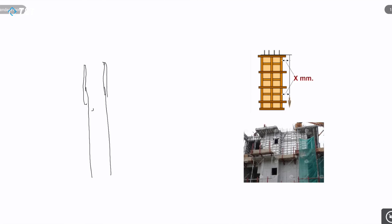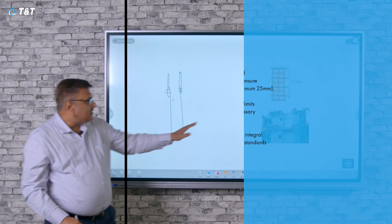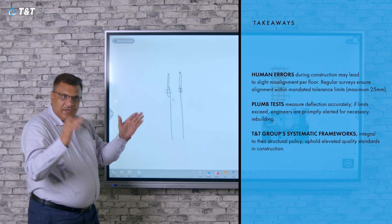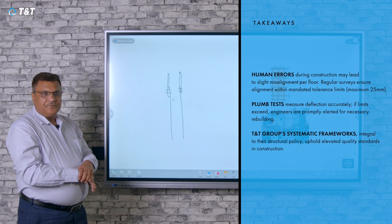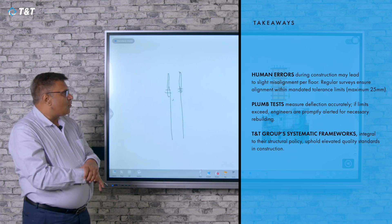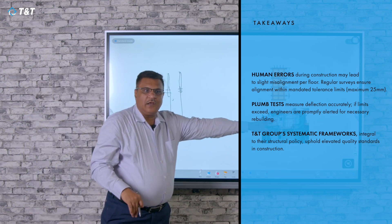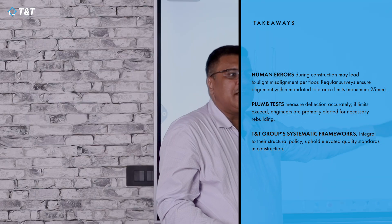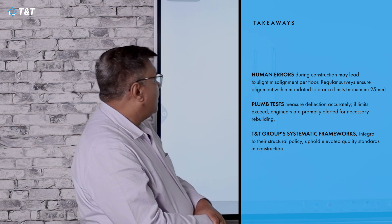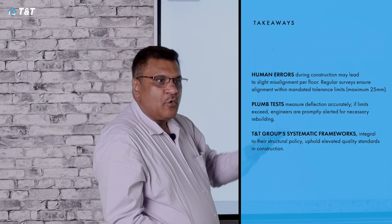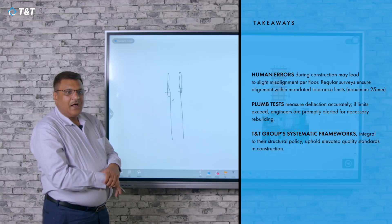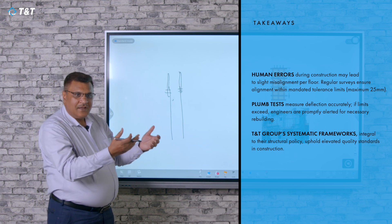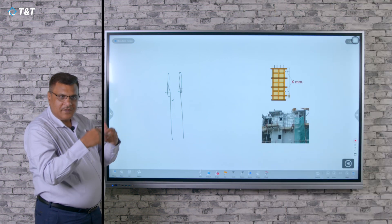If anything goes wrong, then the above shuttering will not be able to be fixed. By using system formwork, which we use within T&T as a policy decision to maintain quality, we have to go with system formwork only, not with normal traditional formwork systems, which protects us from introducing non-verticality within the building.